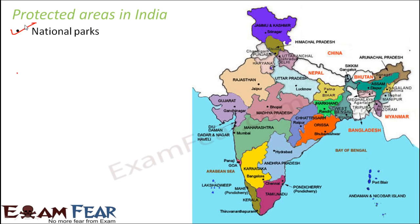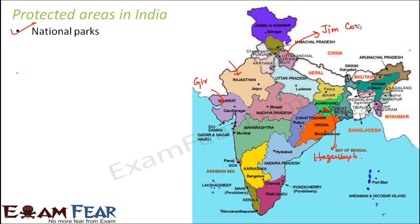If you look state-wise, there are many national parks in different states. In Rajasthan you have the Desert National Park. In Gujarat there is the Gir National Park. In Jharkhand you have the Hazaribagh National Park. In Uttarakhand you have Jim Corbett National Park. In UP you have Dudhwa National Park. In Karnataka you have Bandipur National Park.